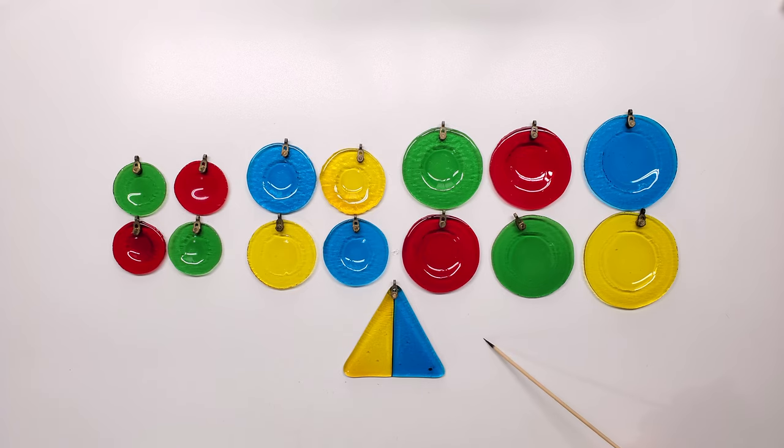For the tail, I've used a triangle whose sides are three and three-quarter inches each. In each piece of glass, I've drilled a hole and installed a hanger.